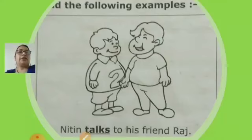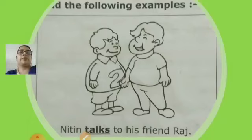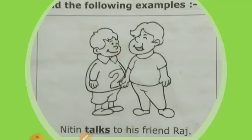On your page number 46, these pictures are given. Here you have to read the following examples. Can you see two boys? They are talking with each other. So what is written below the picture? Nitin talks to his friend Raj.